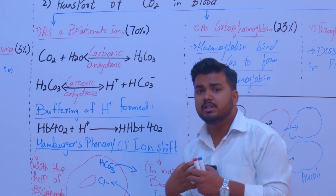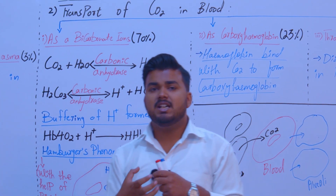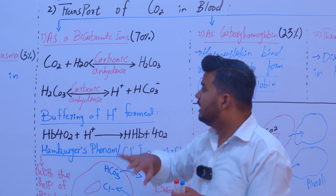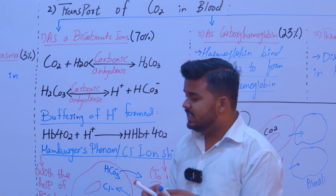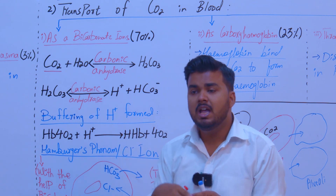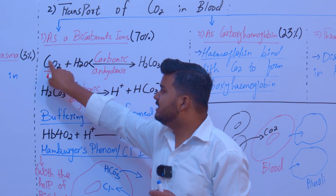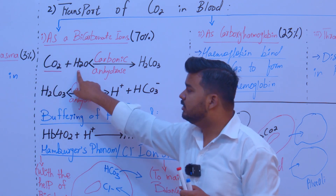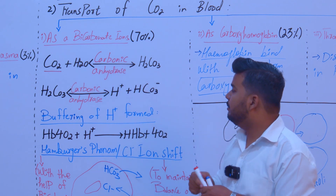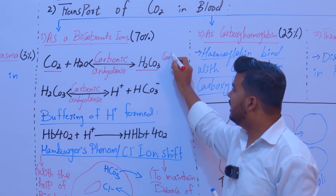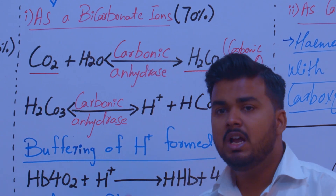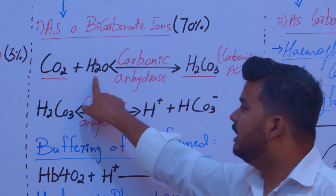Carbon dioxide enters the blood from the tissues. Cells and tissues perform cellular respiration and release carbon dioxide. This carbon dioxide diffuses into the blood and then into red blood cells, where carbon dioxide combines with water and reacts with the help of the enzyme carbonic anhydrase to form carbonic acid.